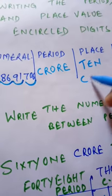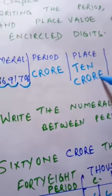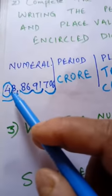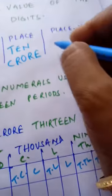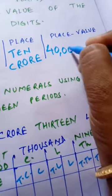And what is the place value? Place value is 4 times 10 crore. It means 40 crore.